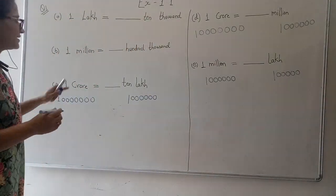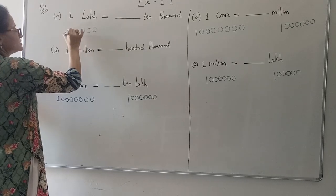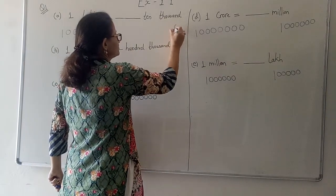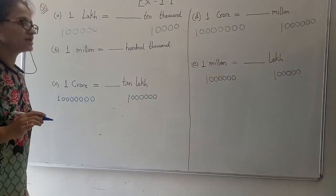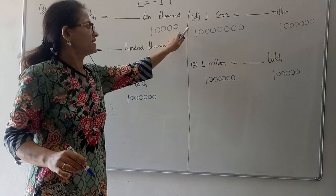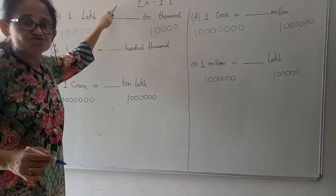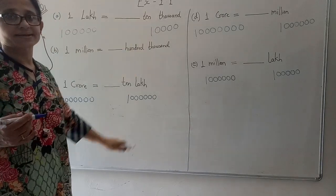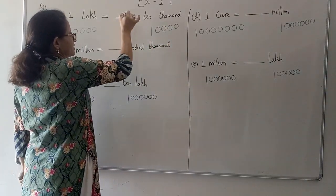When I have to write one lakh, how would I write from the back? Ones, tens, hundred, thousand, ten thousand, and one lakh. Similarly, if I have to write ten thousand: ones, tens, hundred, thousand, and ten thousand. Now we see that one lakh has five zeros and ten thousand has four zeros. To make them equal, if I add one zero then it will be one lakh. So it will be ten ten-thousands.